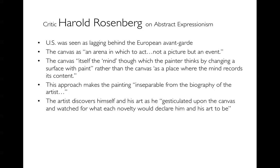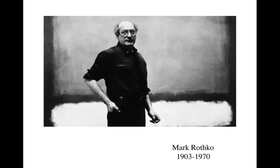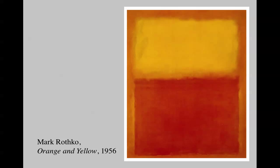Rosenberg adds: 'The artist discovers himself and his art as gesticulated upon the canvas, watching for what each novelty would declare him and his art to be' — pointing toward that existential crisis, trying to prove oneself through art. Mark Rothko, another abstract expressionist, was specifically also known as a color field painter. His paintings are much less about action and painterly slash marks; instead he has a formula of geometric, very soft-edged shapes. Most ABEX paintings, and especially his, are usually quite large — five by seven feet, six by eight — so they really take in your whole peripheral vision and feel like a large field of color in front of your eyes. If you can sit restfully in front of one, they tend to be quite ethereal, beautiful, emotive, and very peaceful.